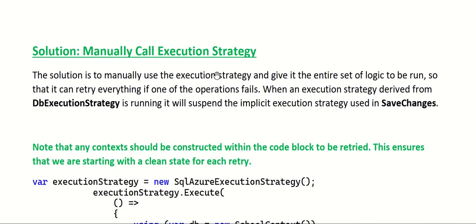The solution is to manually call the execution strategy. Without a retry mechanism, SQL Server would create a transaction and execute things automatically, and on failure would automatically roll back. But when using a retry mechanism, the solution is to manually use the execution strategy and give it the entire set of logic to be run, so that it can retry everything if one of the operations fails.